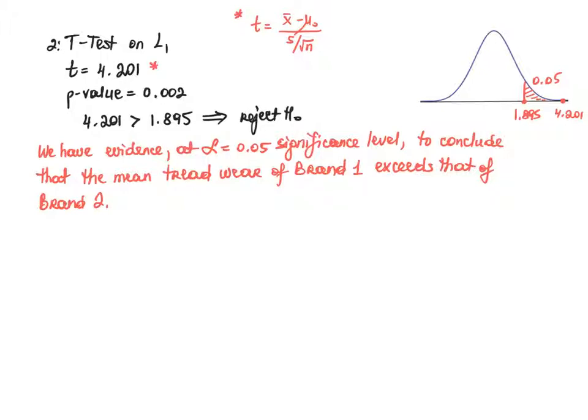I conclude that we have evidence at alpha equals 0.05 significance level to conclude that the mean tread wear of brand 1 exceeds that of brand 2.